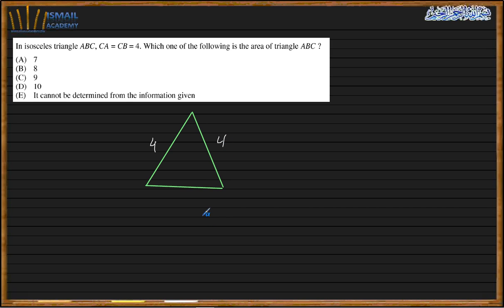Which of the following is the area of the equilateral triangle ABC with side equal to 4? We need the base and the height. We could take one side as the base, but we still need the height, and without more information we cannot get the height directly here. So again, we cannot decide, and E is my choice.